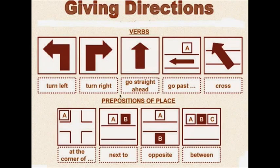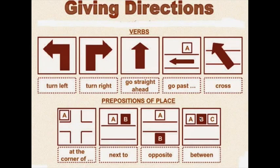Y también es importante que tengan en cuenta otras preposiciones de lugar, aparte de las que vimos anteriormente. Por ejemplo: at the corner of — en la esquina de; next to — al lado de; opposite — en sentido opuesto a; between — en medio de. Estas expresiones, estos verbos y estas preposiciones de lugar les pueden ayudar a terminar de aprender cómo se da una instrucción y una dirección en inglés.